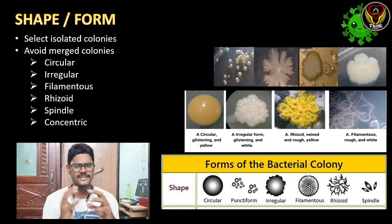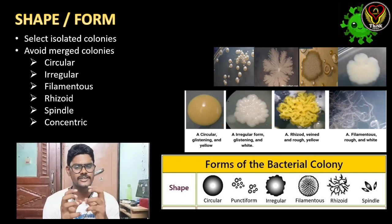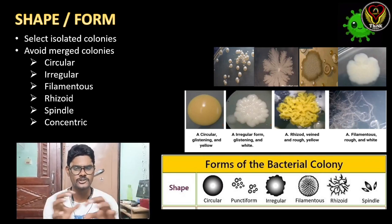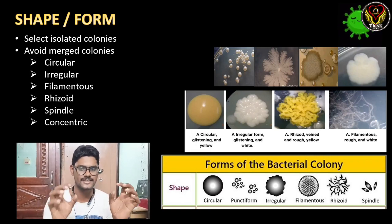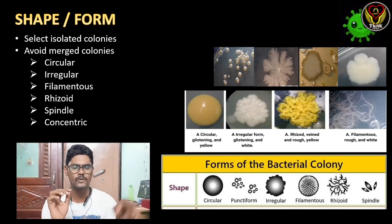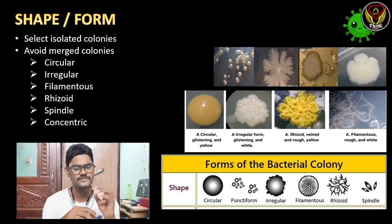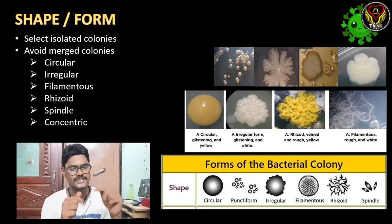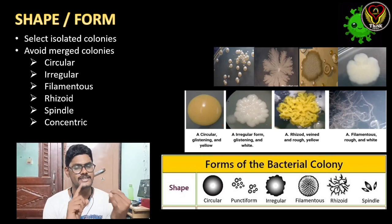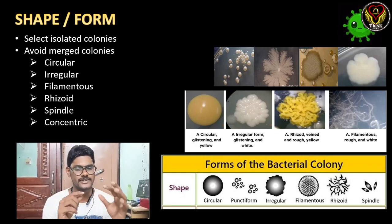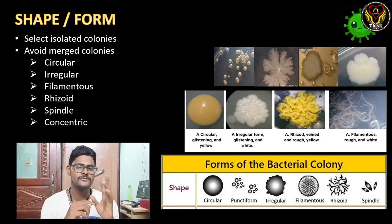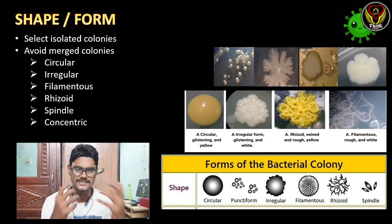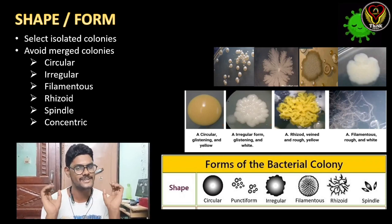For shape or form, there are different shapes but we consolidate them into five to six main categories. We select isolated colonies that are not merged with others — a round colony merged with another may look oval, so avoid merged colonies. The categories are: circular (clear round shape), irregular (different forms), filamentous (spread like a thread), rhizoid (similar to filamentous but resembling plant roots), spindle, and concentric.